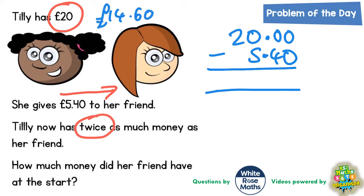But let's just double check with a column method. So 0 take away 0 is 0. 0 take away 4 we can't do, so we need to borrow. We can't borrow from the 0, so we need to borrow from the 2. The 2 becomes 1, and the 1 we've borrowed makes this 0 into 10. This 0 becomes 9 and the 1 we've borrowed makes this 0 into 10. 10 take away 4 is 6, 9 take away 5 is 4, and 1 take away nothing is 1. So we are indeed looking at £14.60.